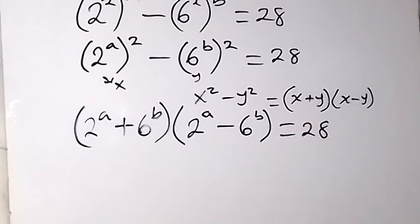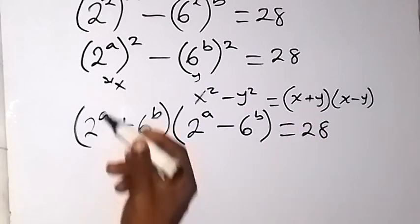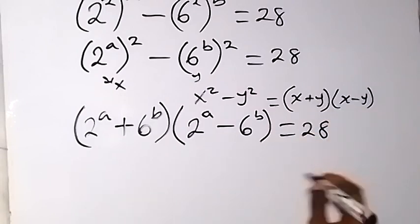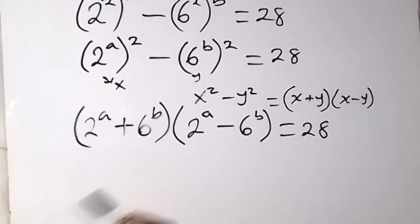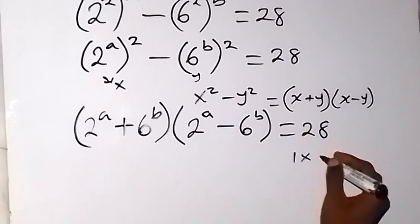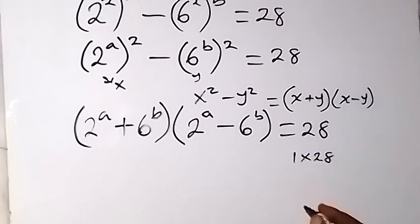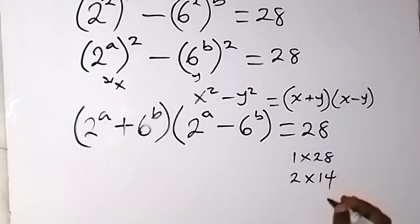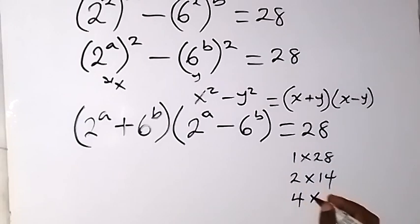After we write it in this form, our 28 — since two numbers multiply to give us 28 — we can split 28 into the form of 1 times 28, we can also split it to 2 times 14, and we can also split it into 4 times 7.